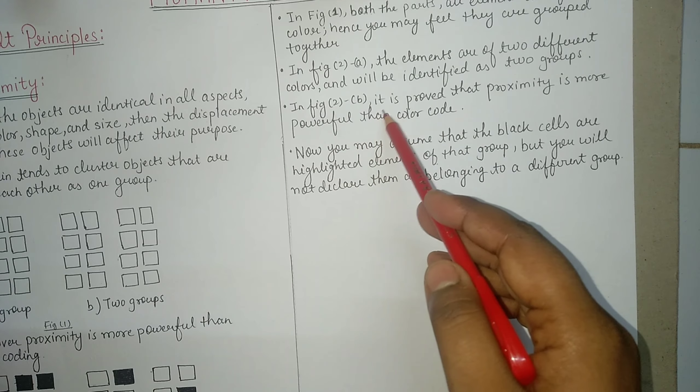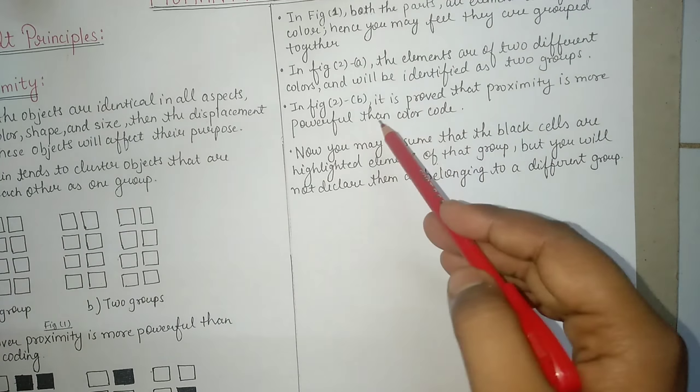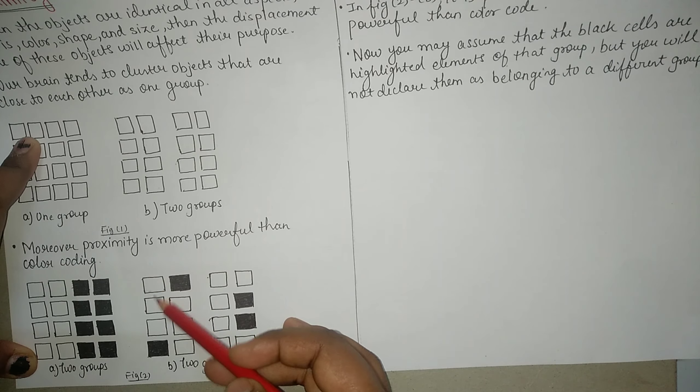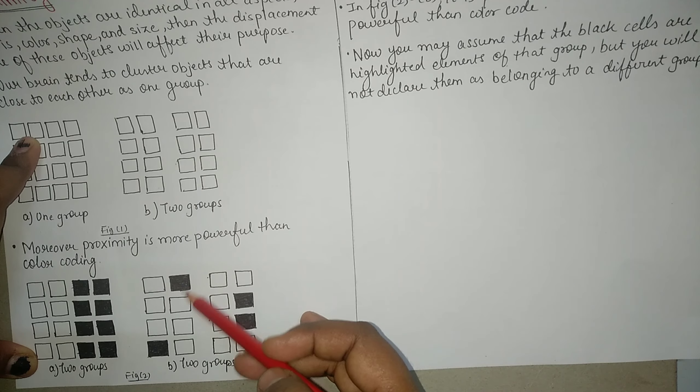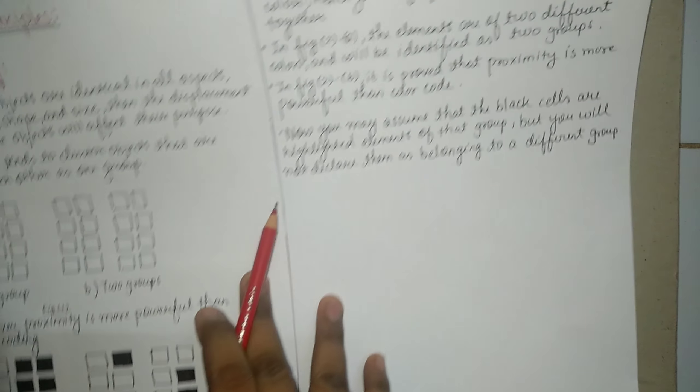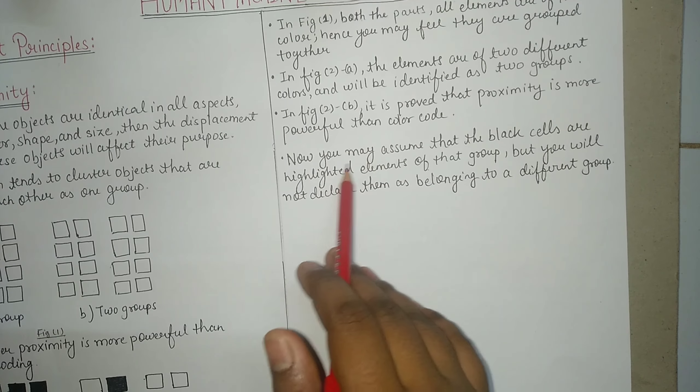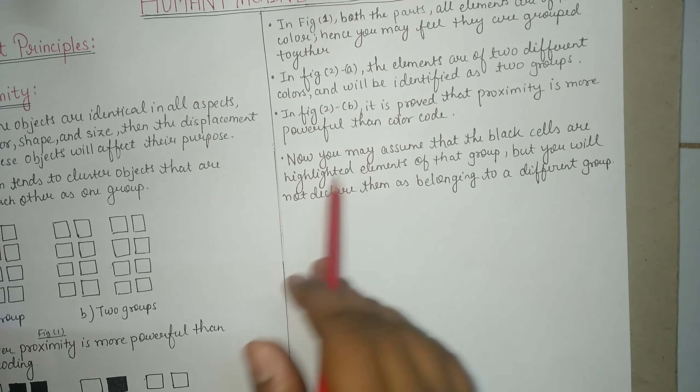Then in figure 2b it is proved that proximity is more powerful than color code. In figure 2b we can see that two color codes have been changed. Some boxes are white in one group and some boxes are black, but proximity rules over and dominates color code because they are treated as highlighted boxes.